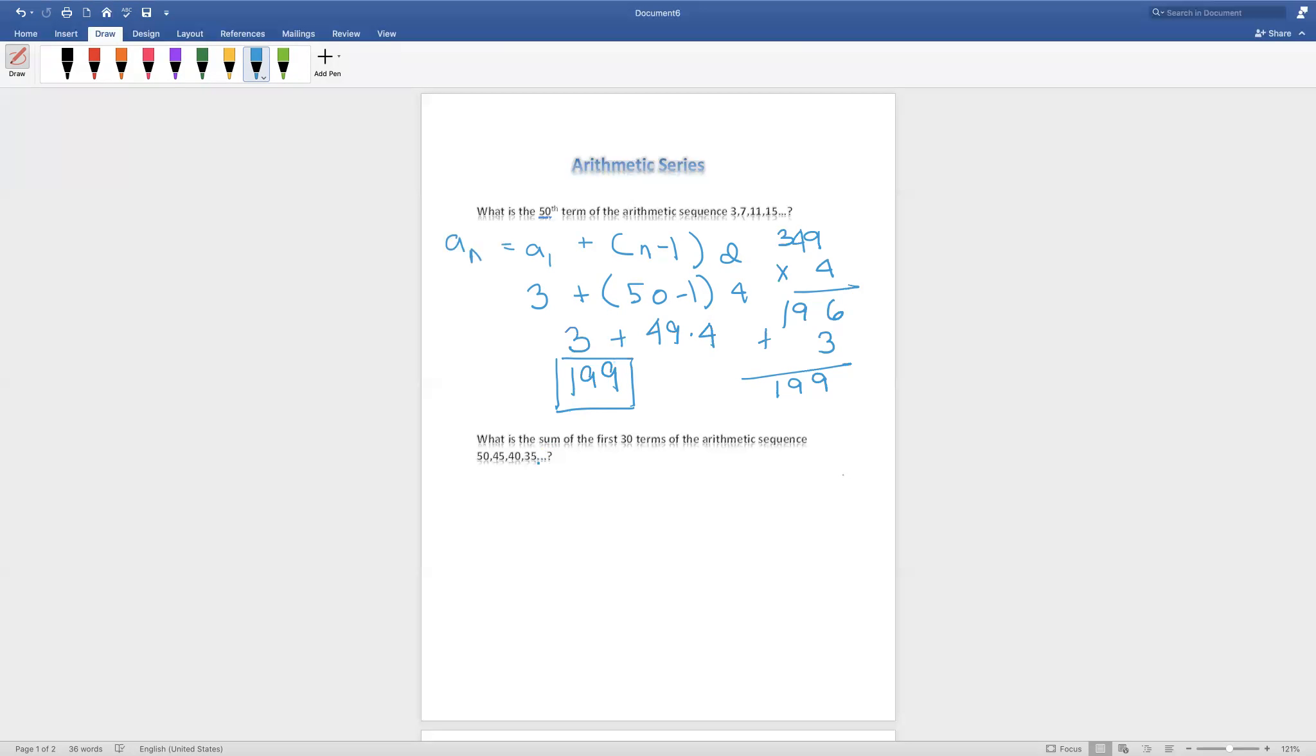What is the sum of the first 30 terms of the arithmetic sequence 50, 45, 40, 35, and so on? For this one, we notice that we need to find the sum of the first 30 terms of the sequence. We can also see that the sequence is decreasing.